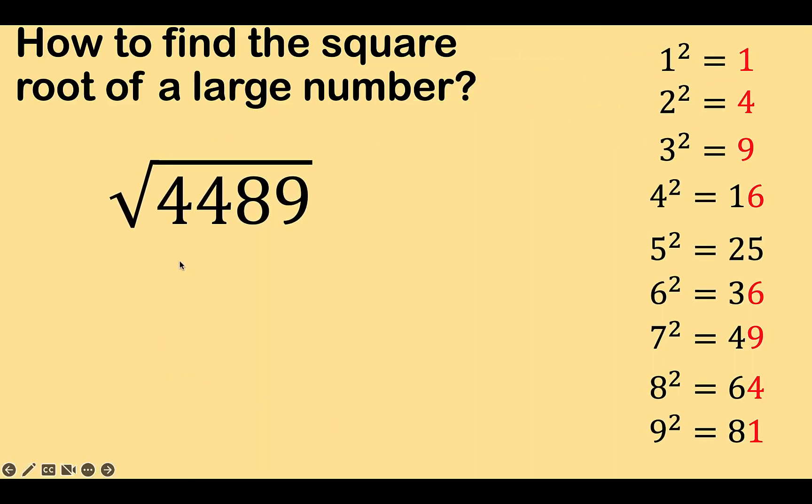With this as our prerequisite knowledge, let's find now the square root of this number. First, it is implied that the decimal point here is after 9. And from that decimal point, count 2 digits to the left. And so we have this 89. Notice that the 1's digit in 89 is 9.